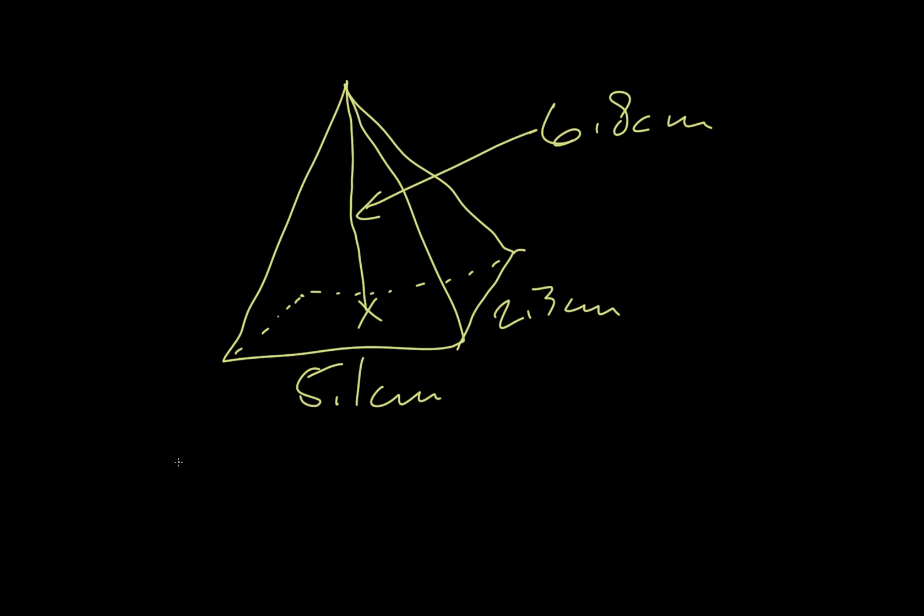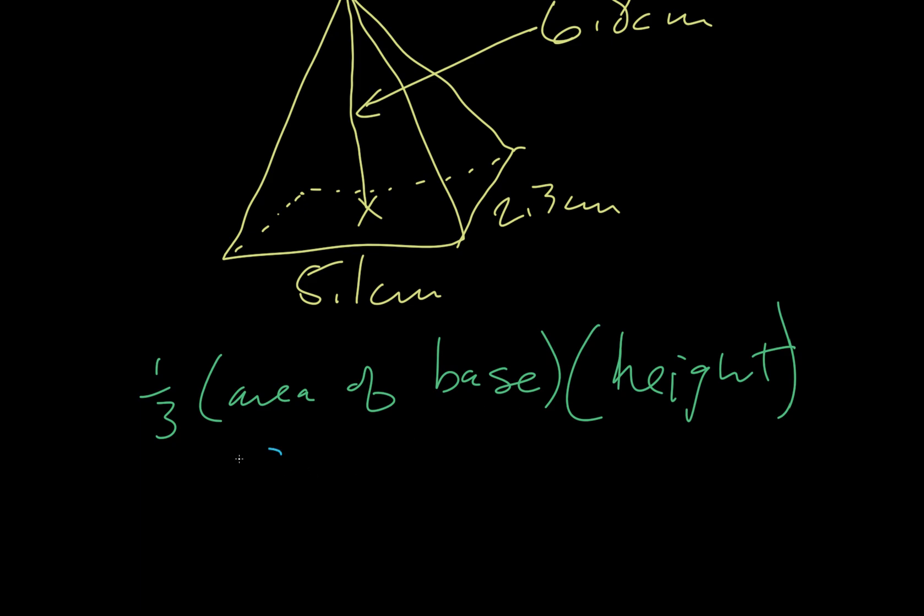So it's gonna be 1/3 area of base times the height. The base is just a rectangle, so we're gonna say 5.1 times 2.3 for that piece. We still have our 1/3 and then our height is 6.8.